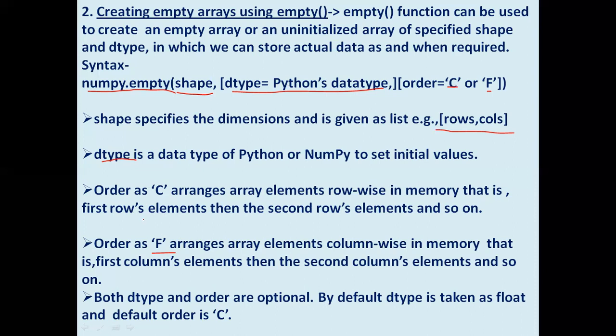Data type and order are optional parameters. You can specify them during array creation or not. If you have not specified data type and order, by default your data type is float, meaning it will hold fractional values, and the default order is C, so your array will be stored row-wise in memory.